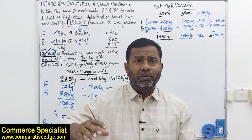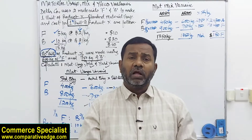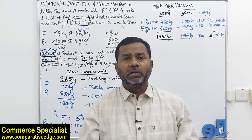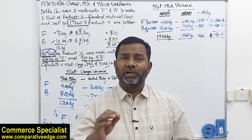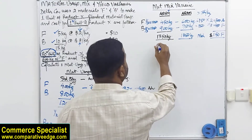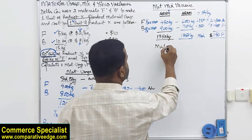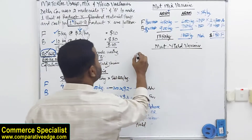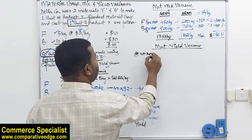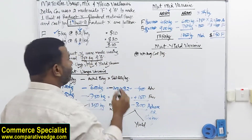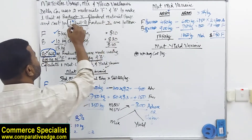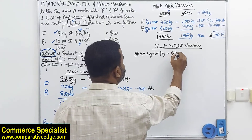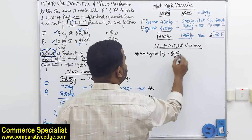Yield variance shows that for a required output, what was the required input versus what input was actually used. There are two methods to calculate it. In method one, we first calculate the weighted average cost per kilogram. For one unit of product X, the material cost is $40 and the total kilograms are 15, so weighted average cost = $40 ÷ 15 kg = $2.67 per kg.